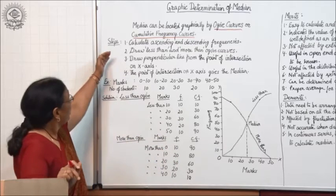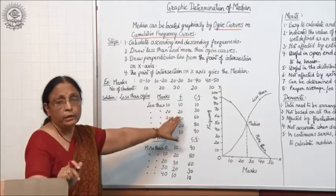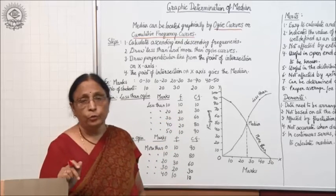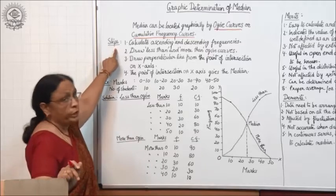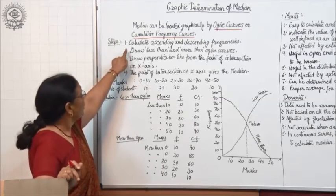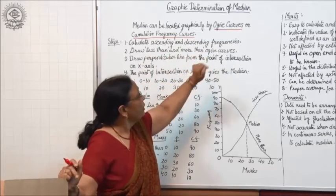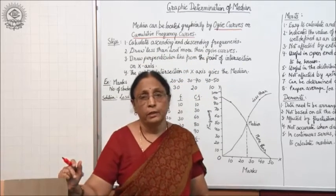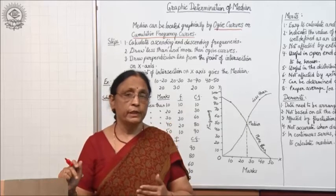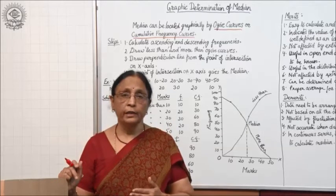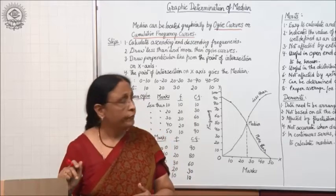First I will tell you the steps, and then we will take an example to make it clear. The first step is to arrange the frequency in ascending and descending order.